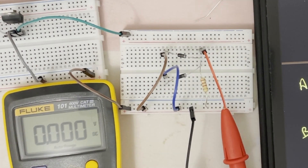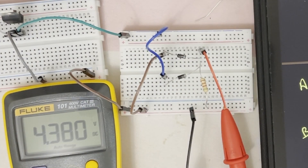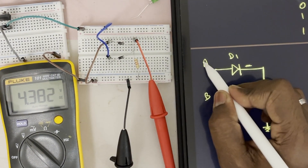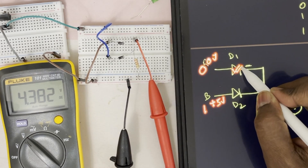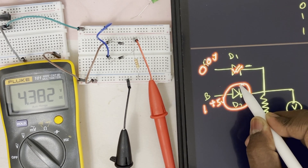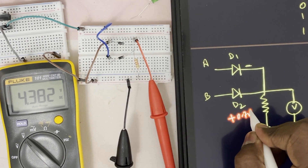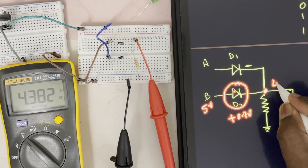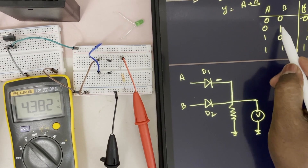Now go to the second condition. If A is 0 and B is 1, then B will be moved to 1. The output should be 1. You can see in the voltmeter I get 4.381 volt. Why 4.381 and not 5 volt? When A is 0 and B is 1, I give 5 volt to B and 0 volt to A, so diode D1 is in reverse bias but diode D2 is in forward bias. When D2 is in forward bias, it makes a voltage drop of 0.7 volt. So if I give 5 volt in, there is a 0.7 volt drop, giving around 4.3 volt output. Case 2 is satisfied.